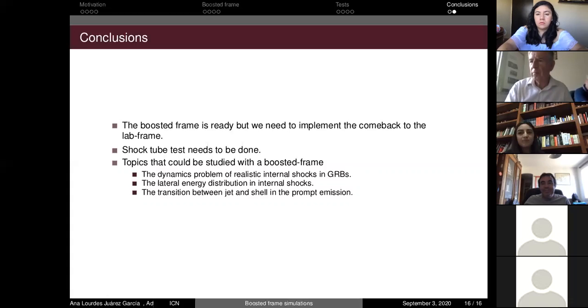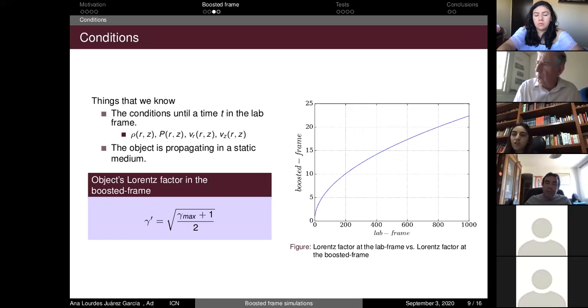Thank you very much, Anna. There is a question from Diego. Diego, can you ask your question please? Yeah, is your model only valid for a static medium, or can the medium have a velocity component? No, it could have a velocity component, but the equation that I showed you of the object's Lorentz factor is going to change. But we only have to change that equation inside of the subroutine and everything works the same.